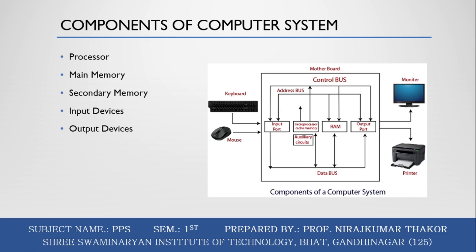There are mainly five components of a computer system: computer hardware, computer software, and liveware. The processor is an electronic circuit within the computer system. The CPU, or central processor, carries out instructions of the computer program with the help of basic arithmetic, logical operations, and input/output operations.